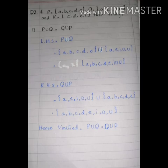On the left-hand side we have P union Q. P set contains A, B, C, D and Q set contains A, E, I, O, U. We unite the two sets and remove duplicate elements. We will write the answer in ascending order.